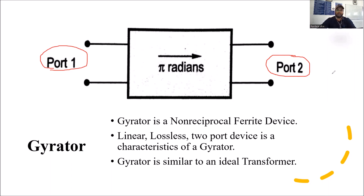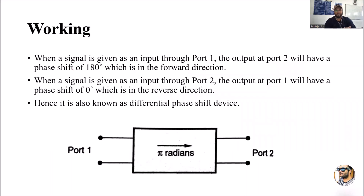We will also see what happens if we give the signal through port 2 as an input and extract the output from port 1 in the reverse direction. Let's see the working. A microwave signal is given as an input through port 1. Whenever a microwave or electromagnetic wave is given as input through the gyrator using port 1, the output is achieved at port 2.